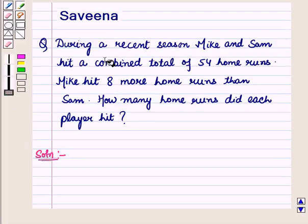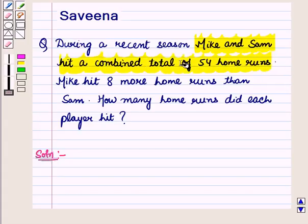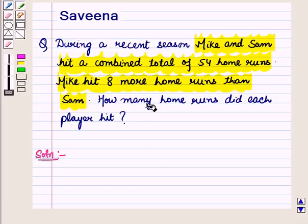Now we are given that Mike and Sam hit a combined total of 54 home runs. Mike hit 8 more home runs than Sam, and we have to find the number of home runs hit by each player.